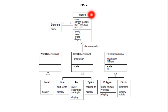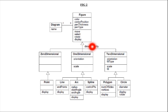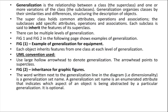What is the superclass here? Figure. Figure is the superclass. What are the subclasses of figure? Your figure can be zero-dimensional, one-dimensional, or two-dimensional — divided based on dimensionality. The word written next to the generalization line in the diagram — dimensionality — is a generalization set name.